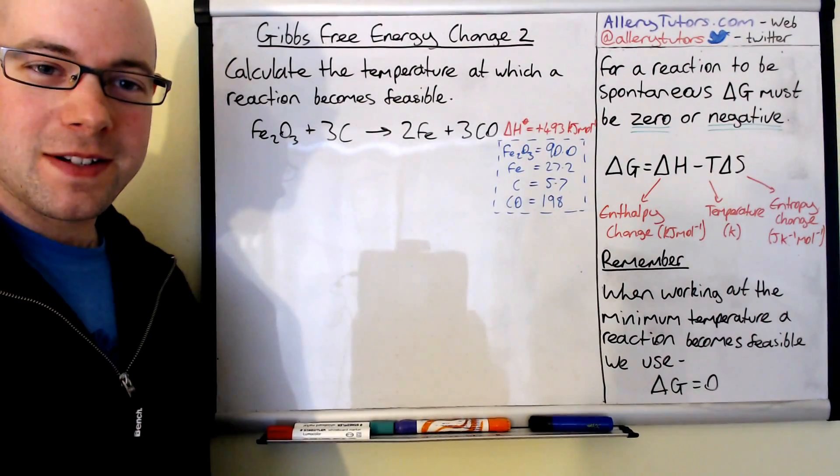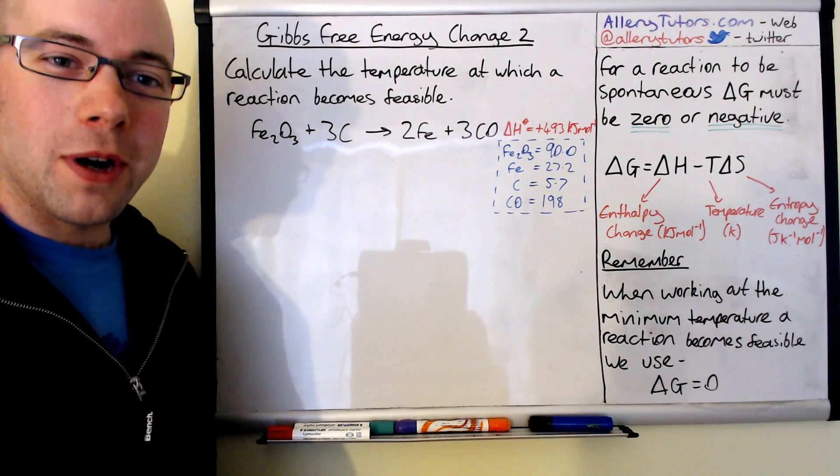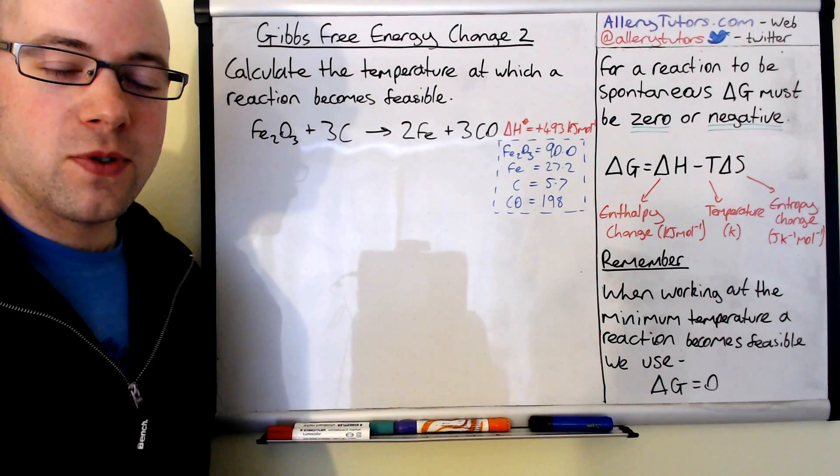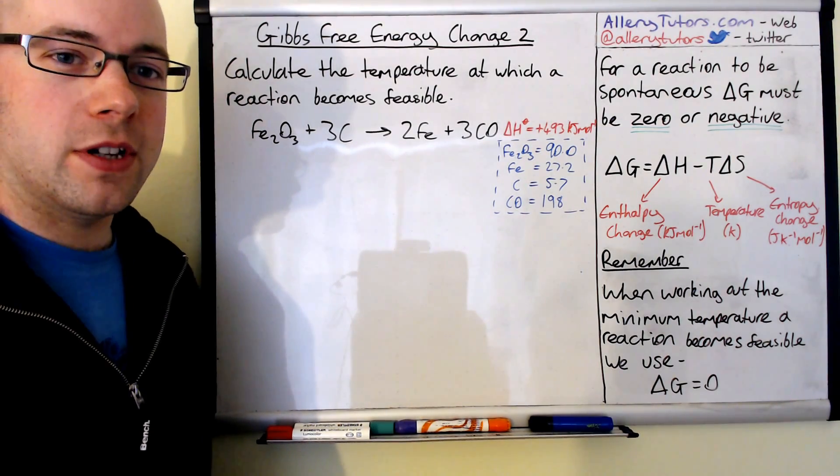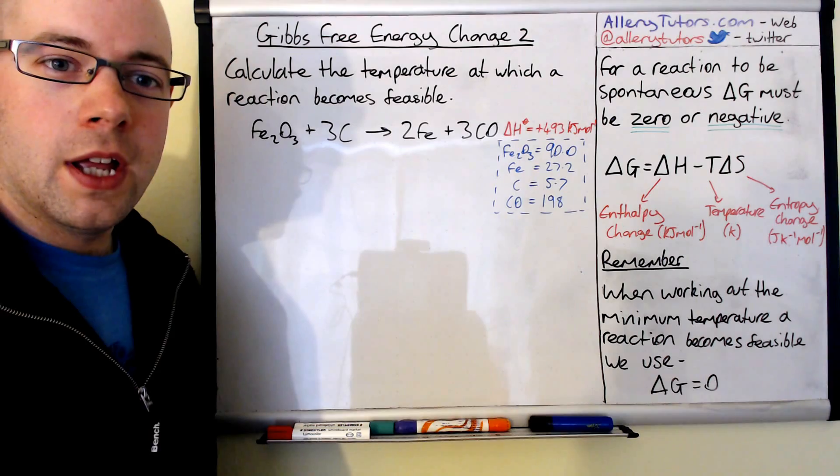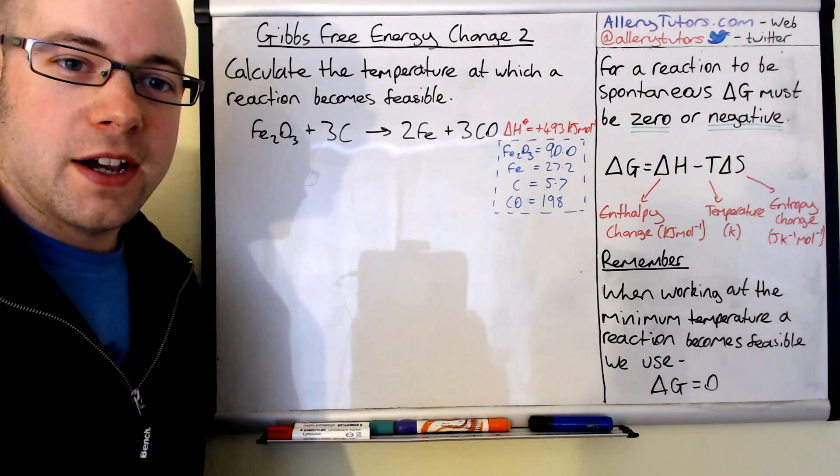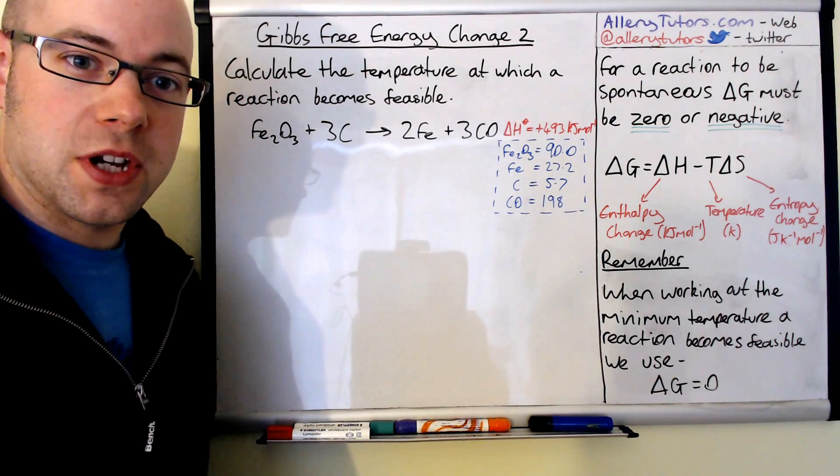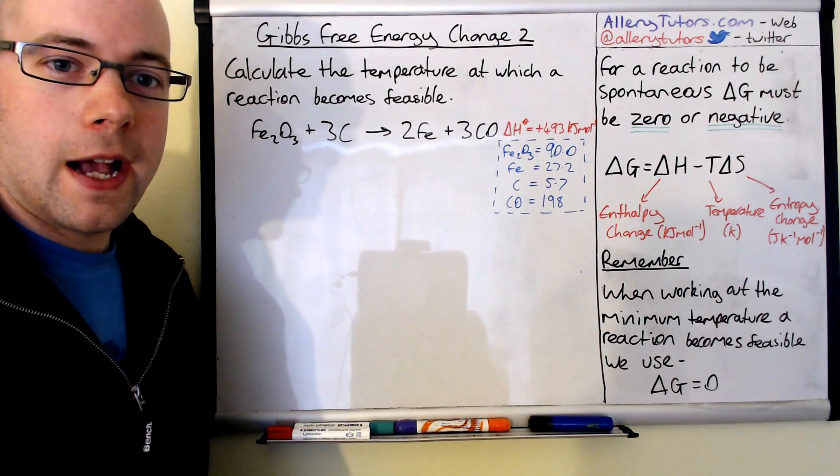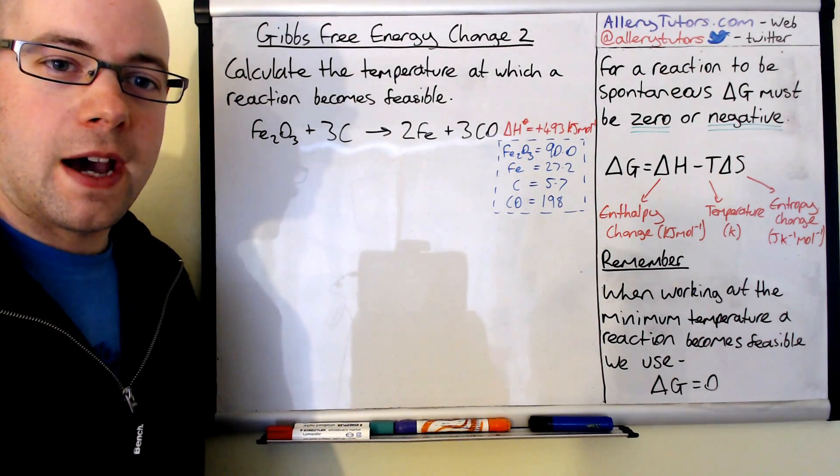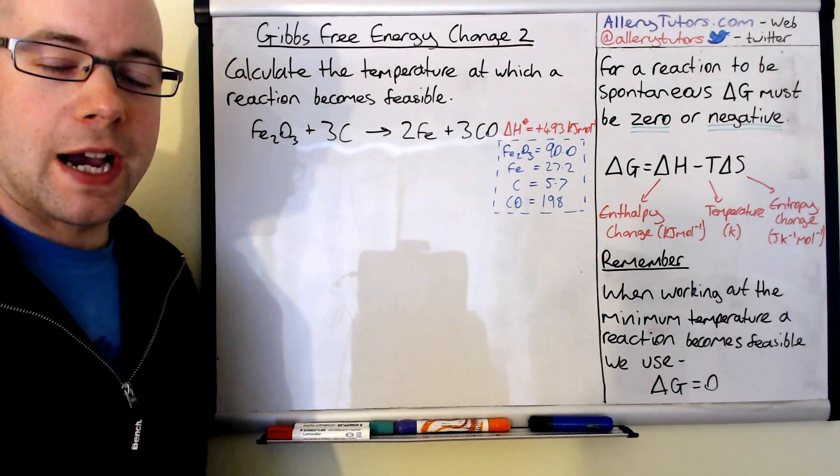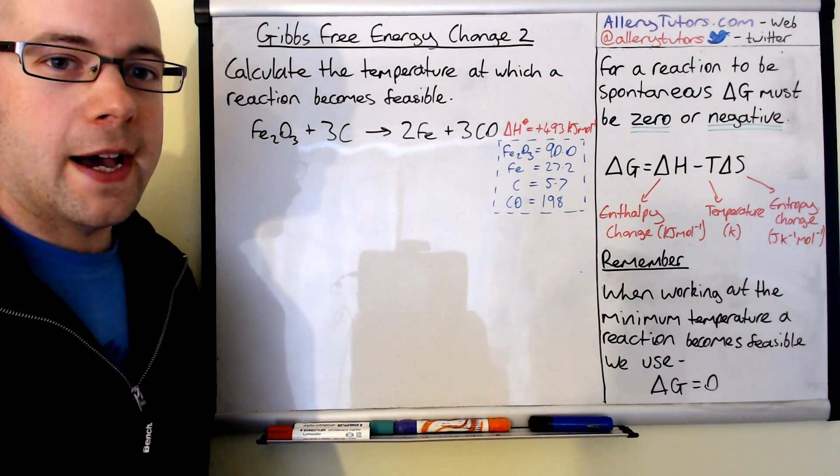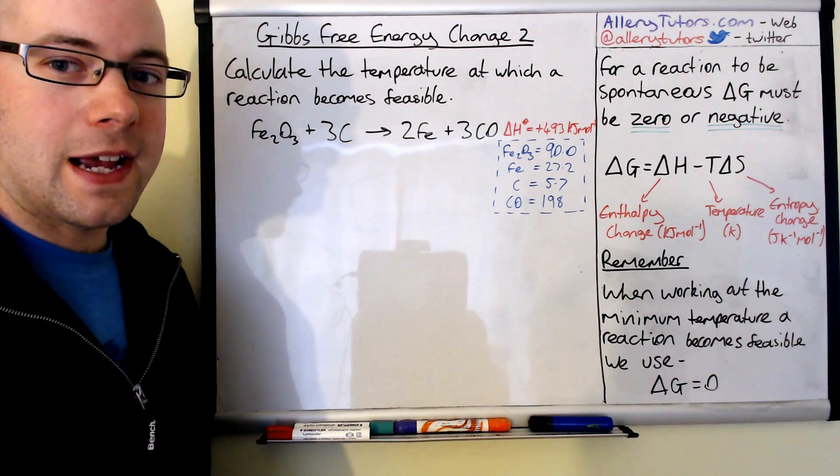Hi there, my name is Chris Harris and I'm from Alamututons.com and welcome to this video on Gibbs free energy change. This is the second video. In this video, we're going to look at another example calculation using Gibbs free energy equation, but this time we're going to look at a calculation that asks you to work out the minimum temperature required for a reaction to be just feasible. We're going to go through a worked example in this video.